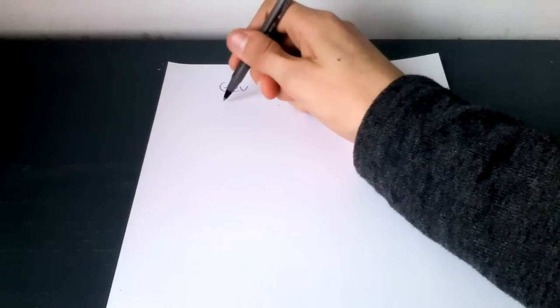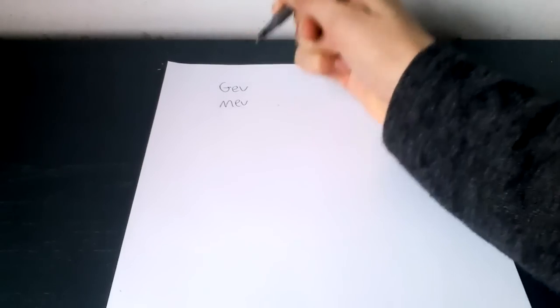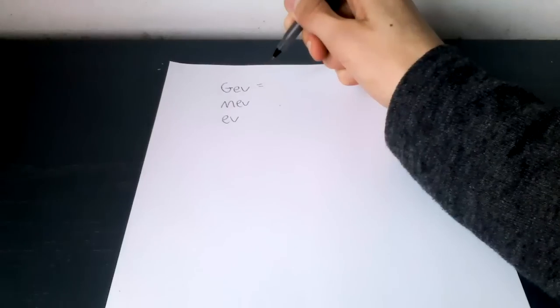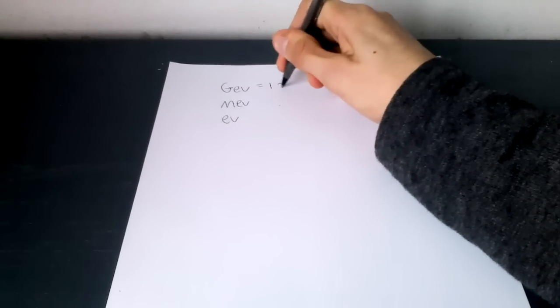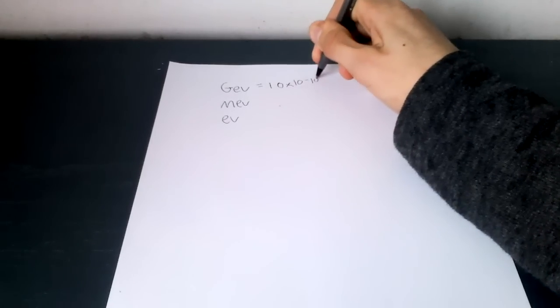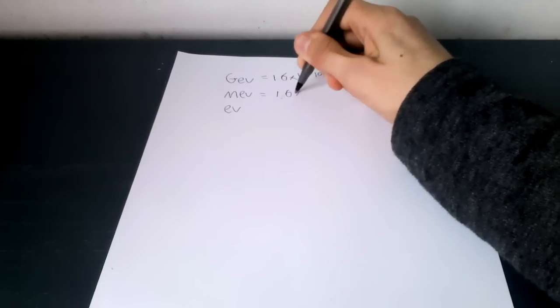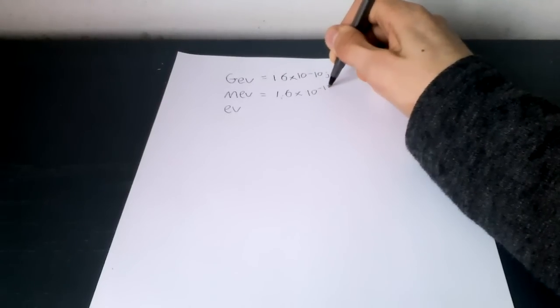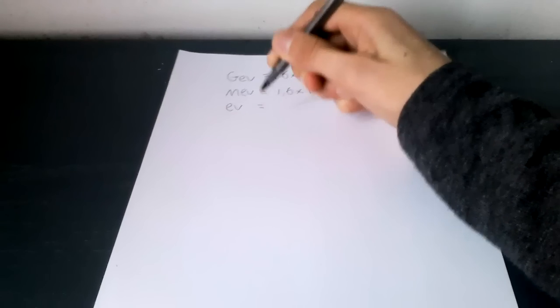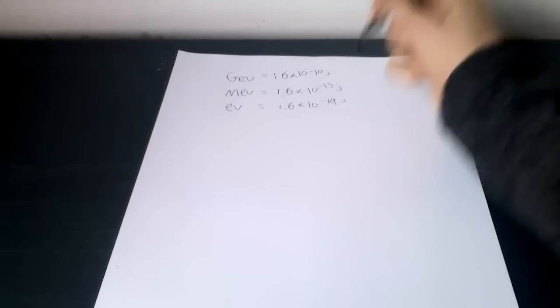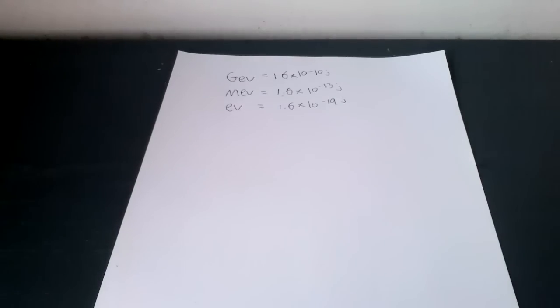Electron volt is equal to 1.6 times 10 to the minus 19 joules. It is the energy gained or lost by charge of a single electron moved across an electric potential difference of one volt.